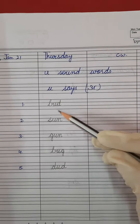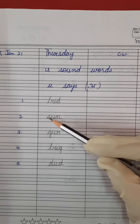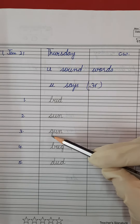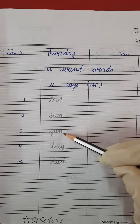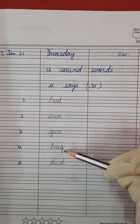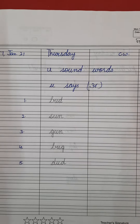Repeat once again with me. B, A, D — Bud. S, A, N — Sun. G, A, N — Gun. B, A, G — Bug. D, A, D — Dud.